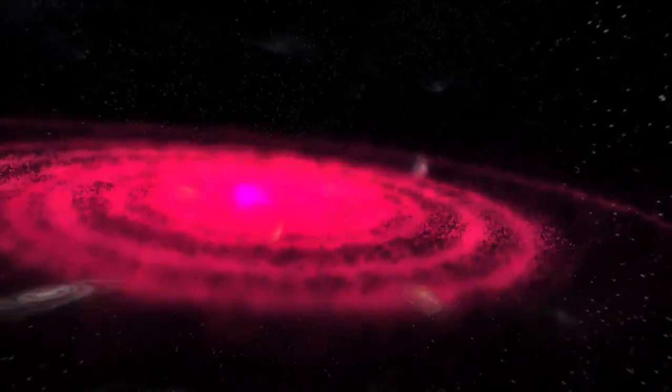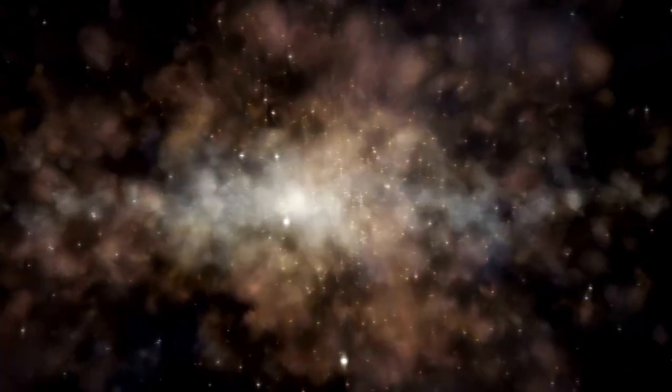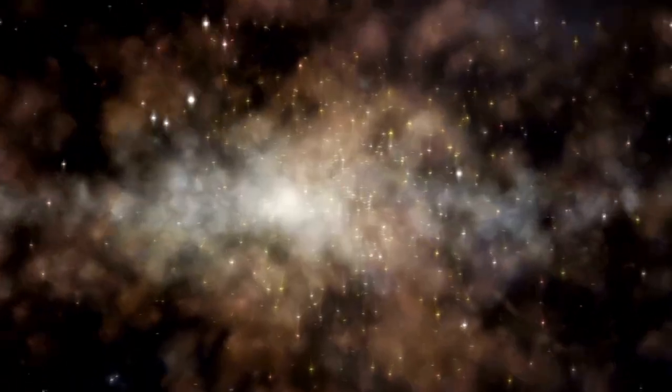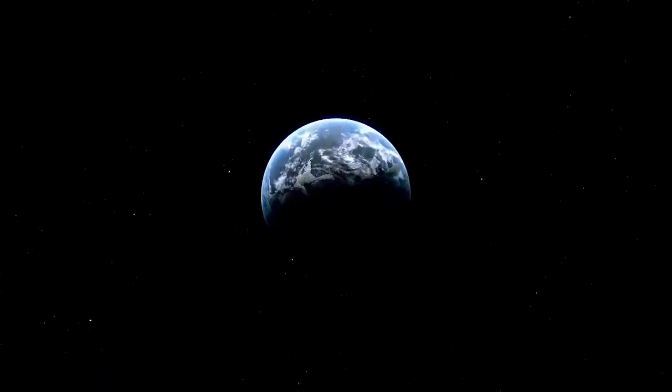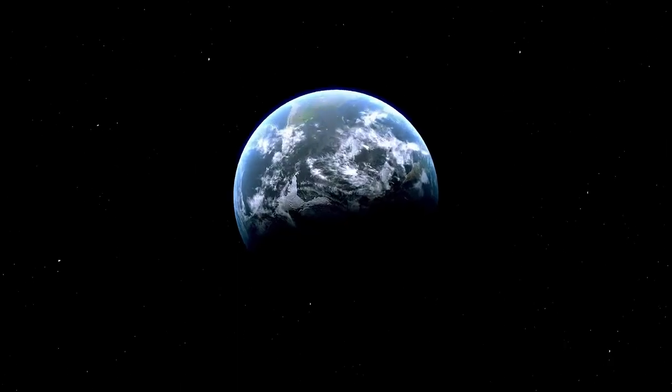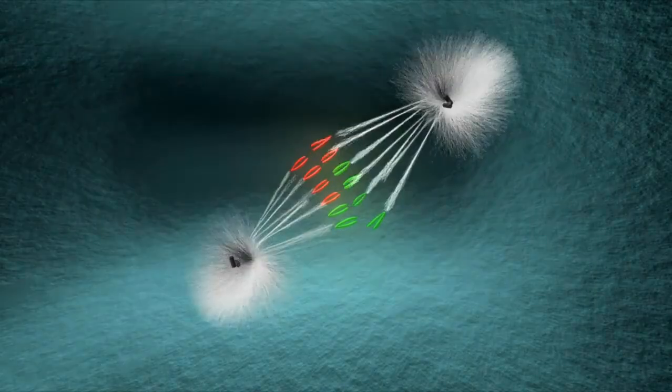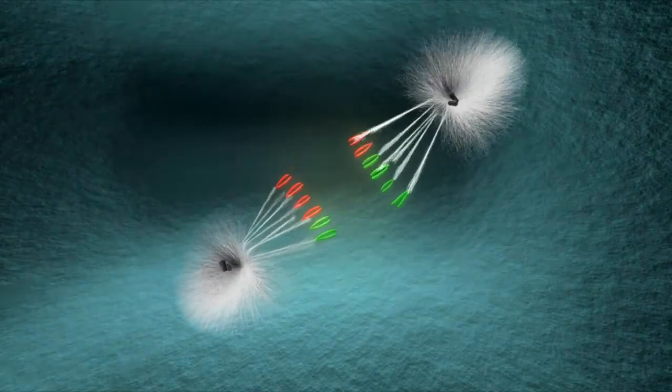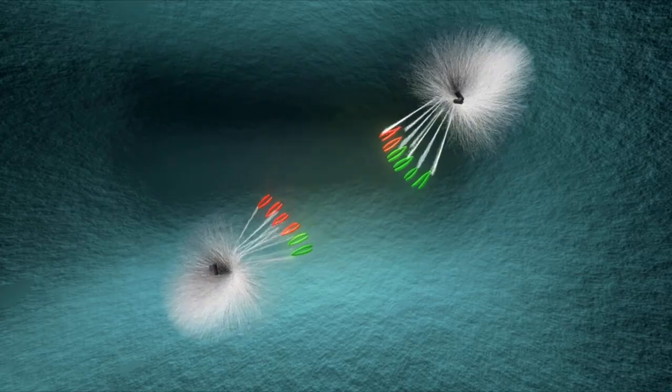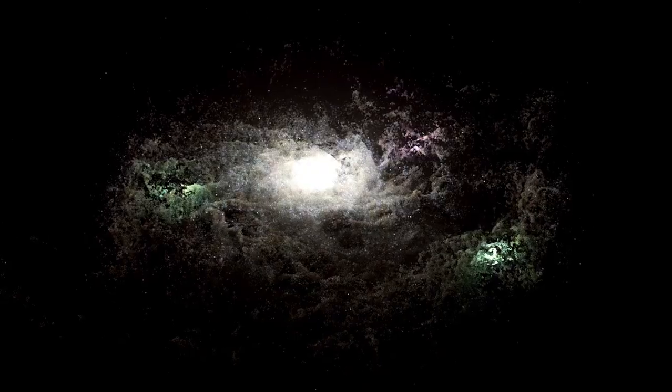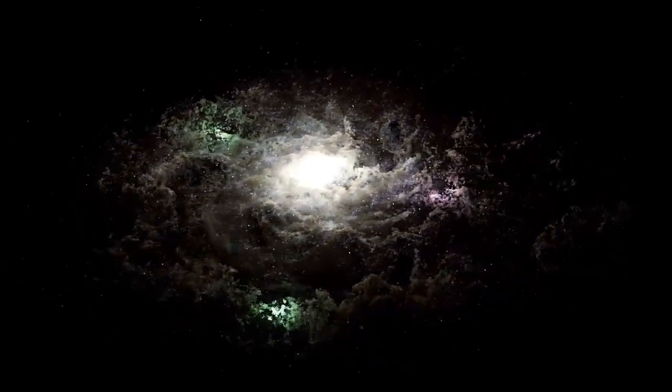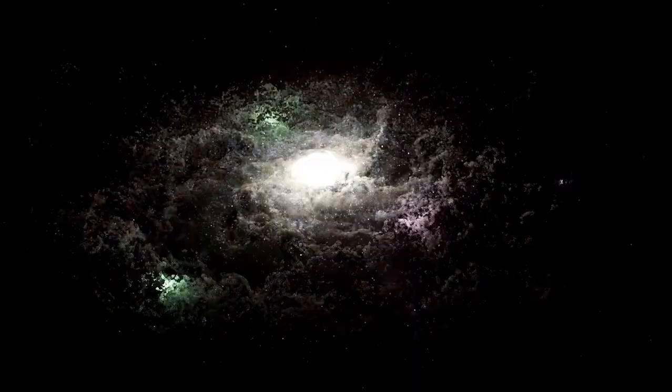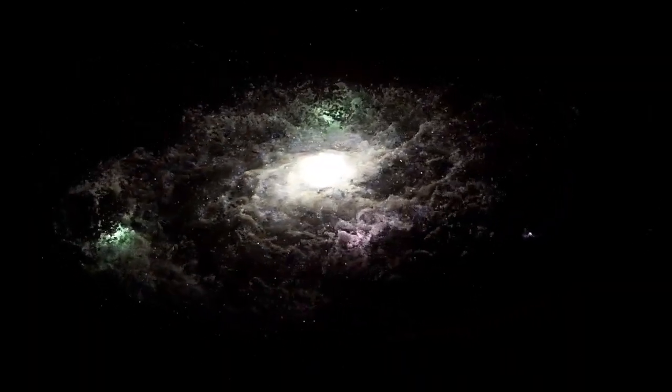Beyond the Milky Way, we find our local galaxy group, which includes around 50 galaxies. This, in turn, is part of the Virgo cluster, which contains over 1,500 galaxies. Even this massive cluster is merely one component of the Laniakea supercluster, a vast collection of around 100,000 galaxies. Yet, the scale does not stop there. Our supercluster is just one among millions of other superclusters in the observable universe.